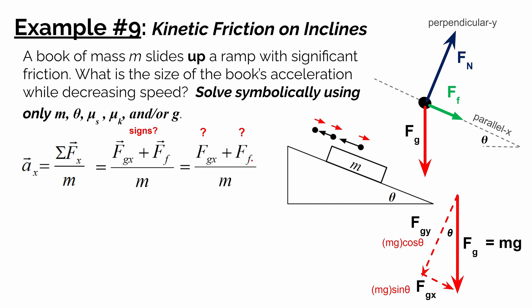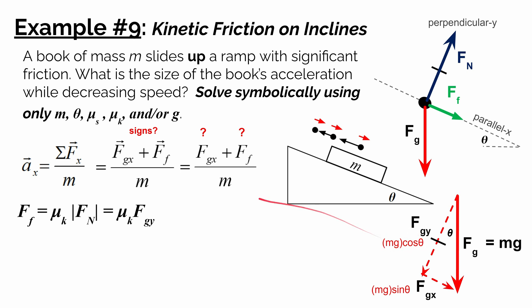For the frictional force, the kinetic friction equation gives: force of friction equals mu sub k times the normal force. Since there's no acceleration in the rotated y direction, the normal force equals fgy. We already expressed fgy as mg cosine theta, so the force of friction in terms of the given variables is mu sub k times mg cosine theta.